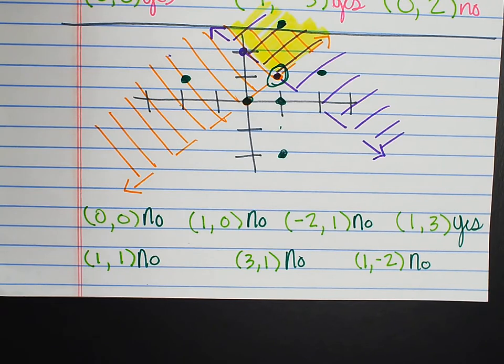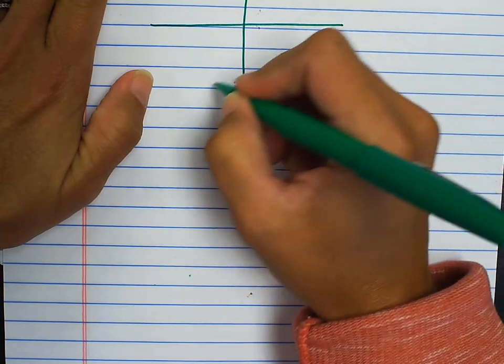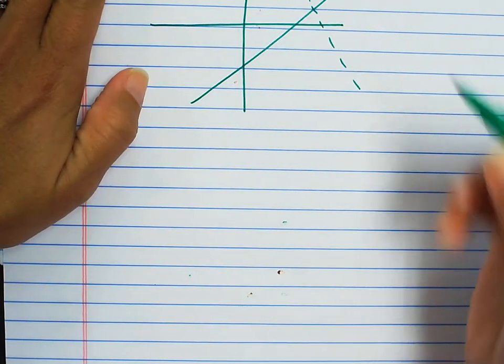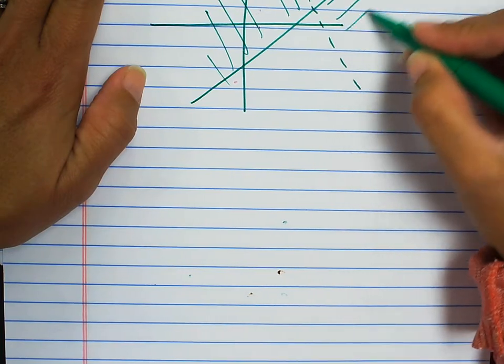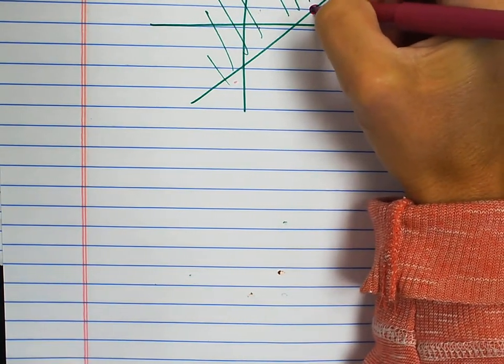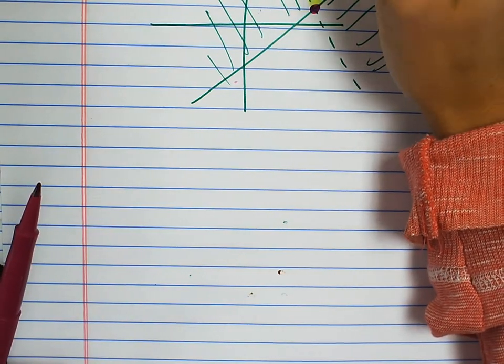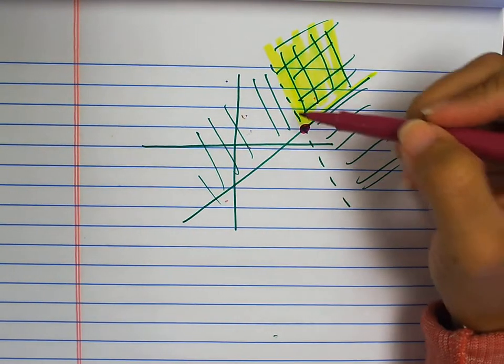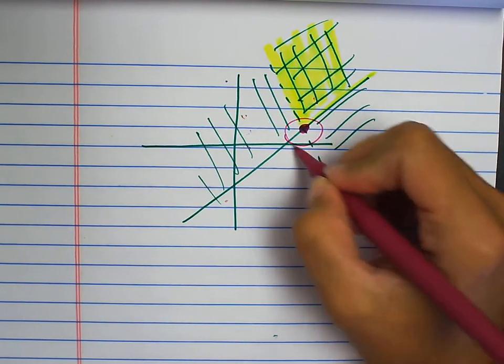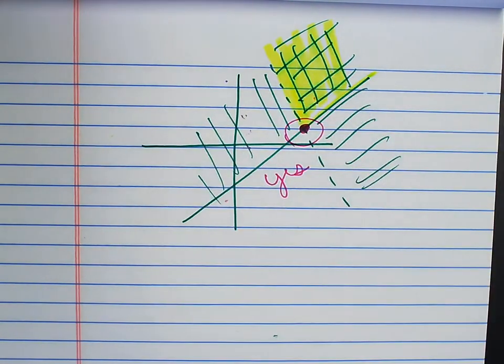Keep in mind: if you have a solid line, anything that lands on that line is a solution. Let me do a quick example. Let's say I had this line and this line, with shading going this way and this way. The point where the two lines intersect would actually be a solution. The double shaded region is here. It lands on the dotted line, but it also lands on the solid line. This would be a solution to this system of equations.